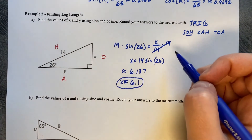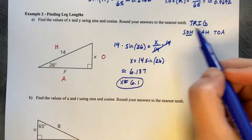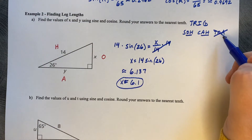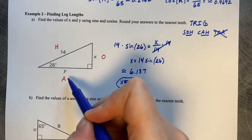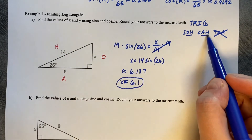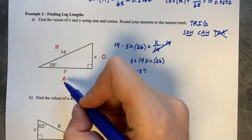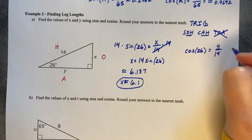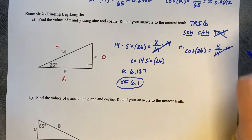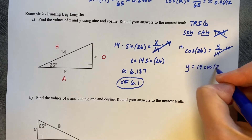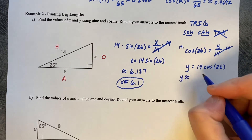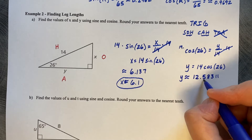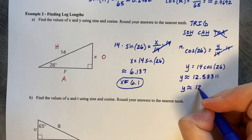For the y value, we have adjacent and hypotenuse — that comes from the cosine. We're not using tangent on this problem at all because both opposite and adjacent were unknown; we knew the hypotenuse. So cosine of 26 equals y over 14. Multiplying both sides by 14, y equals 14 times the cosine of 26, which is approximately 12.58311 — rounded to one decimal place, the 8 rounds the 5 up, so y is approximately 12.6.